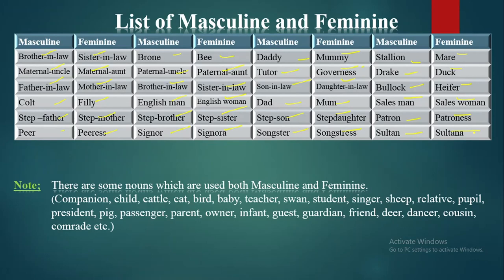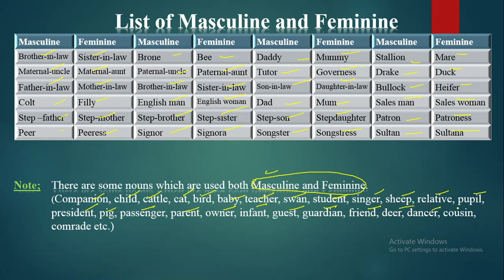Additional pairs: brother-in-law/sister-in-law, maternal uncle/maternal aunt, father-in-law/mother-in-law, Englishman/Englishwoman, stepbrother/stepsister, signor/signora, daddy/mummy, tutor/governess, son-in-law/daughter-in-law, dad/mom, stepson/stepdaughter, songster/songstress, stallion/mare, drake/duck, salesman/saleswoman, patron/patroness, sultan/sultana. Furthermore, some nouns used as common gender include: companion, child, cattle, cat, bird, baby, teacher, swan, student, singer, sheep, relative, pupil, president, pig, passenger, parent, owner, infant, guest, guardian, friend, dancer, cousin, comrade.